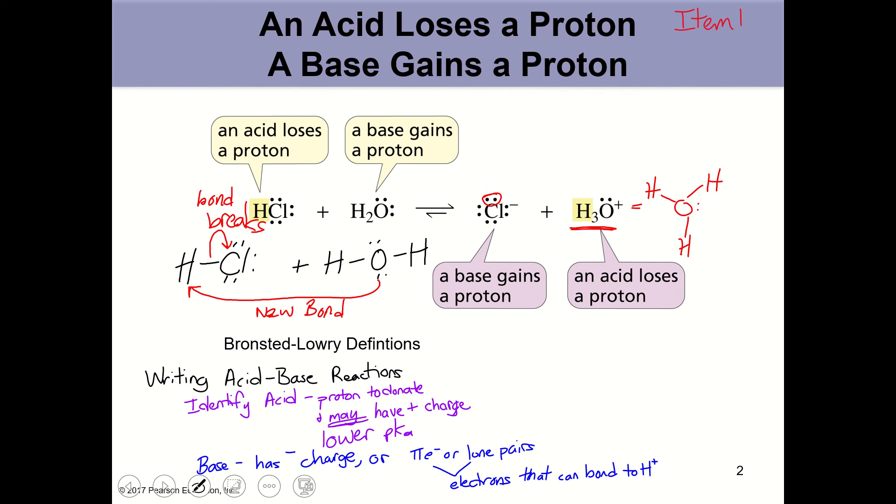One of the things that you're going to need to be able to do is to write acid-base reactions. In order to write the reactions, I want you to be able to identify the acid. The acid is going to have some characteristics that help you identify it. It's going to have a proton that it can donate. It may have a positive charge. And the pKa of the proton should be lower than the other molecule. If there are two molecules in the reactants that have bonds to protons, the molecule that has the lower pKa for its bond to H is the molecule that acts as an acid.